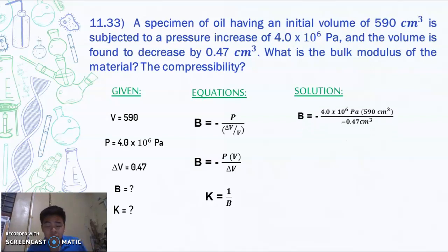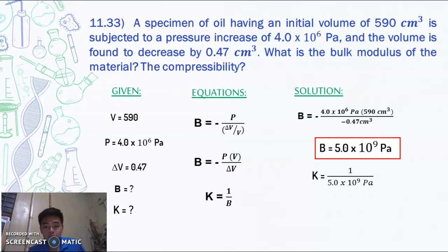In order to solve for this, we just need to plot in all our given to the equation again. So our pressure is 4.0 times 10 to the 6 Pascal multiplied by our volume, which is 590 cubic centimeter, all over negative 0.47 cubic centimeter, which will give us a bulk modulus of 5.0 times 10 to the 9 Pascal. Now for our compressibility, it's just 1 over B, so 1 over 5.0 times 10 to the 9 Pascal, which gives us 2.0 times 10 to the negative 10 per Pascal.